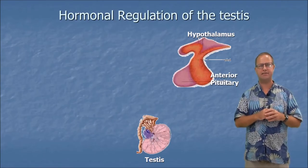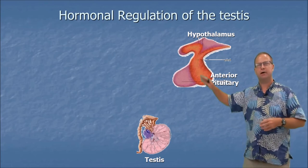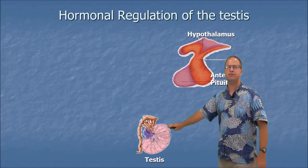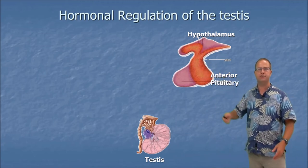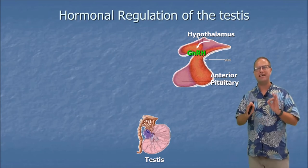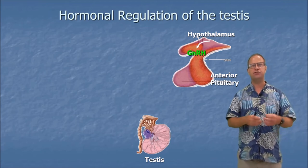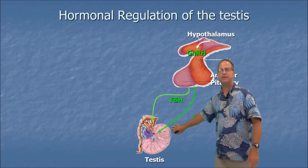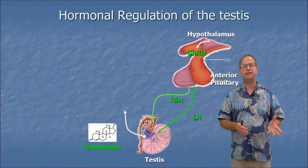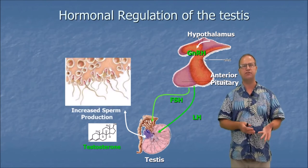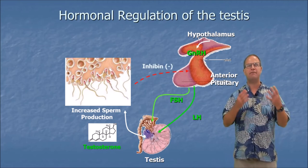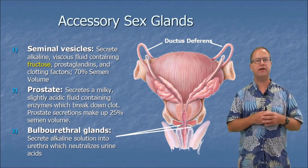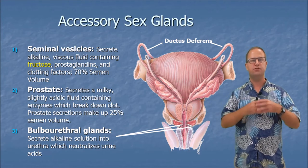Now, hormonal regulation of the testis. The hypothalamus secretes GnRH — gonadotropin releasing hormone — which travels to the anterior pituitary and stimulates production and release of FSH and LH. LH stimulates testosterone production, and together testosterone and FSH stimulate spermatogenesis and sperm maturation. Once there are adequate amounts of sperm, a hormone called inhibin provides negative feedback on the anterior pituitary, reducing FSH and LH production.